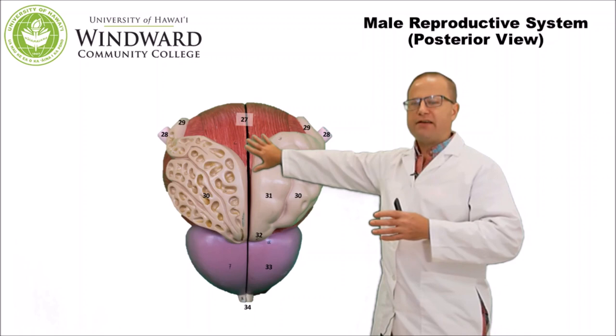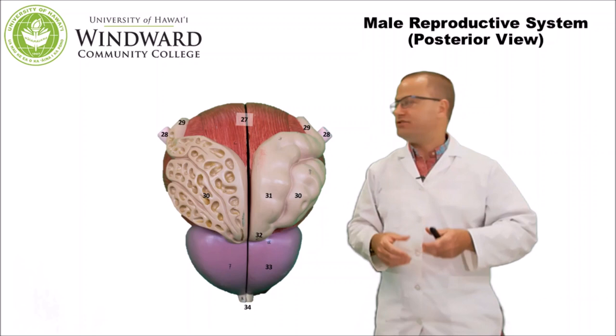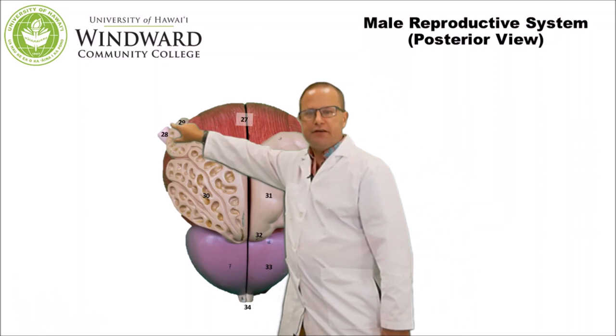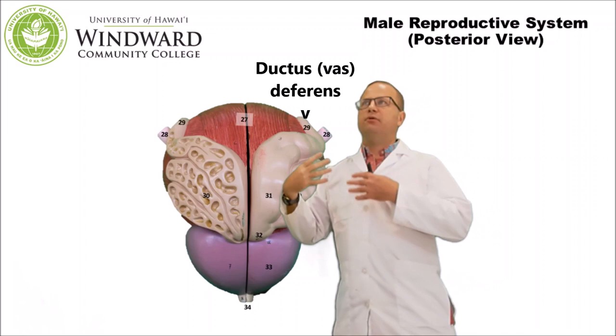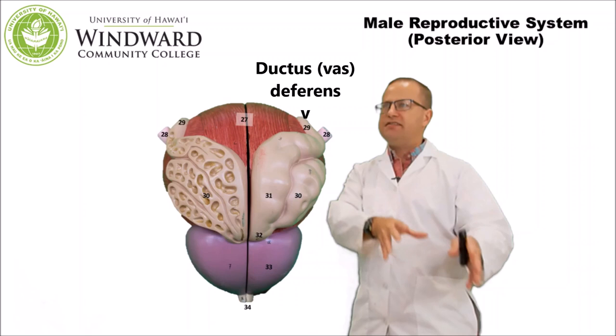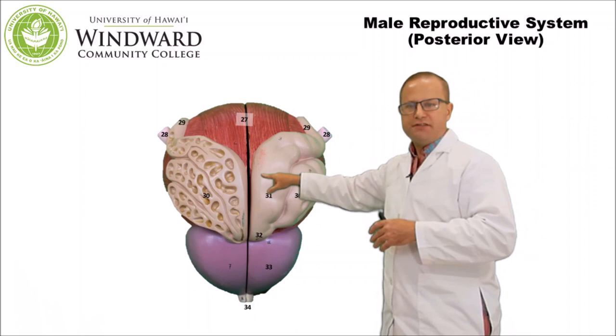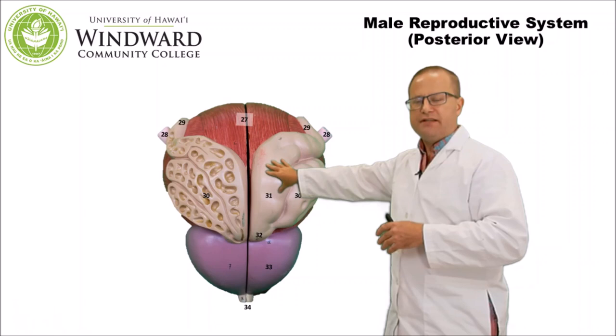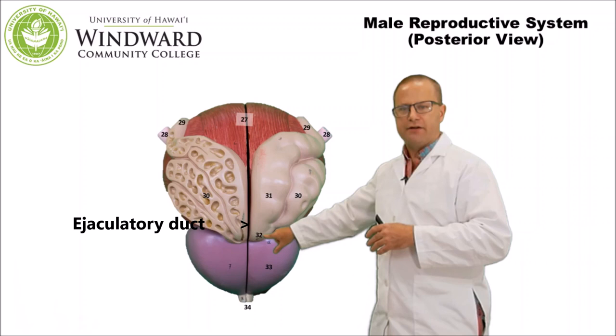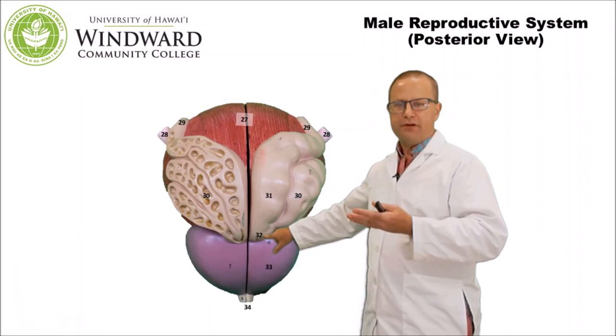This model is a posterior view without the rectum, so we can see more of the seminal vesicles and prostate gland. Up top is the urinary bladder with the ureters emptying into it. The ductus deferens transports spermatozoa from the epididymis to the ampulla of the vas deferens, which unites with the seminal vesicles at the ejaculatory duct. This places sperm and seminal fluid into the prostatic urethra, which then leads to the membranous urethra and finally the spongy or penile urethra.